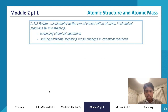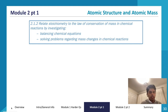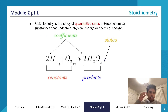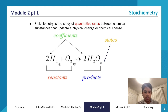Now we're on 2.1.2. Stoichiometry is the study of quantitative ratios between chemical substances that undergo a physical or chemical change. The coefficients are what we look at — not the subscripts — to find stoichiometry or quantitative ratios. These are also called molar ratios. For example: 2H2 + O2 → 2H2O.